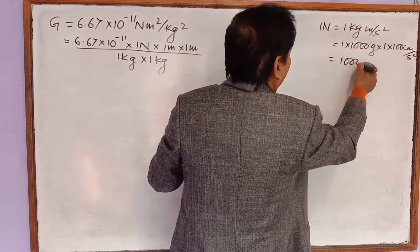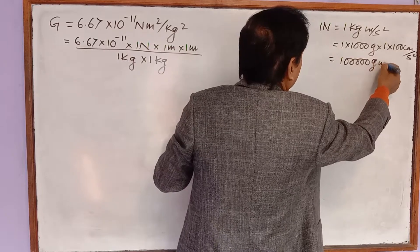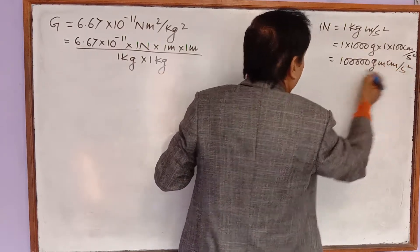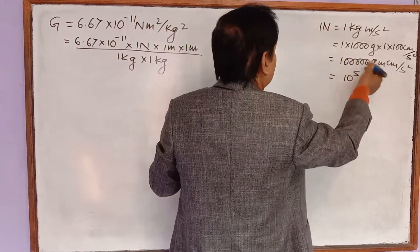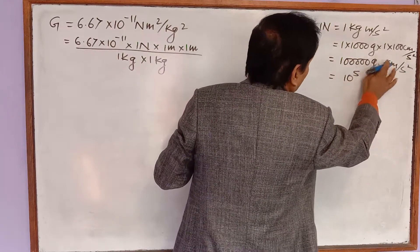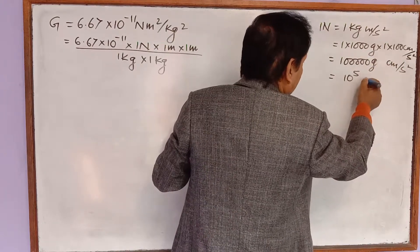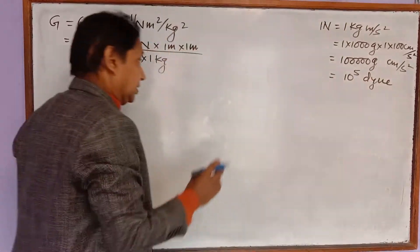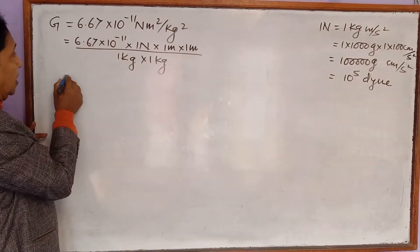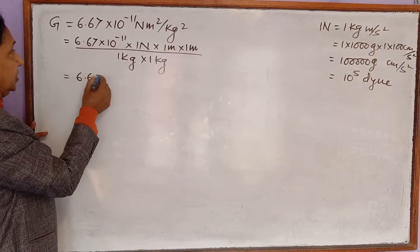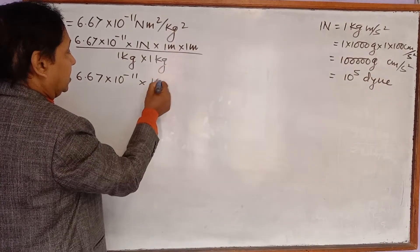This is equal to 10 to the power 5 gram centimeter per second square, which is equal to 10 to the power 5 dyne. So in place of one Newton, I am writing: 6.67 into 10 to the power minus 11, and one Newton is equivalent to 10 to the power 5 dyne.